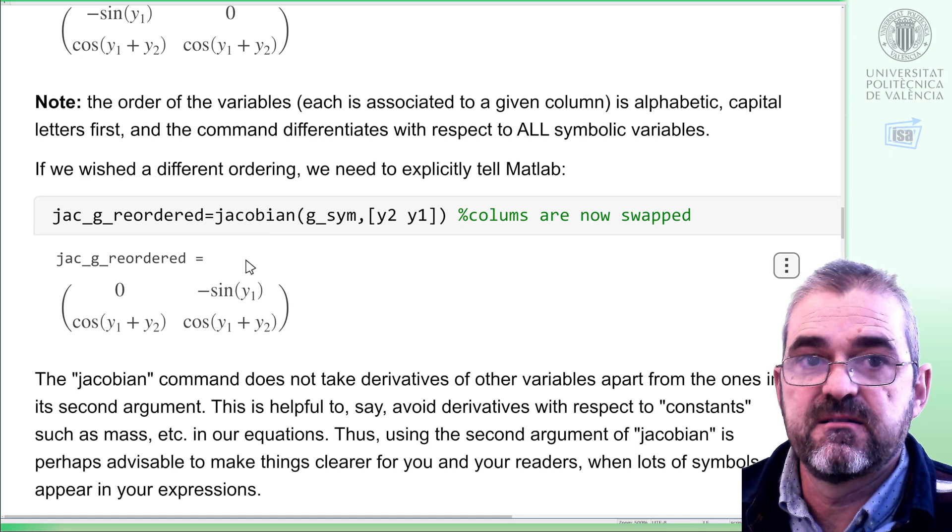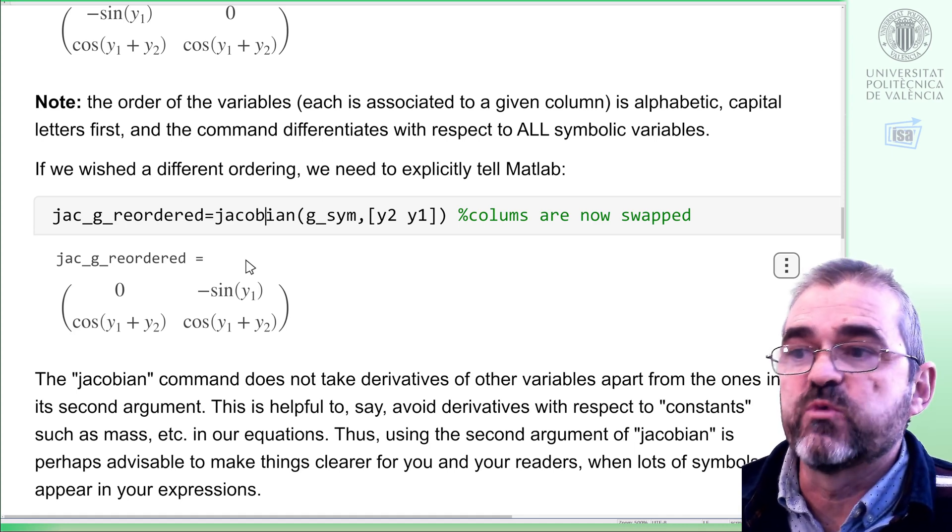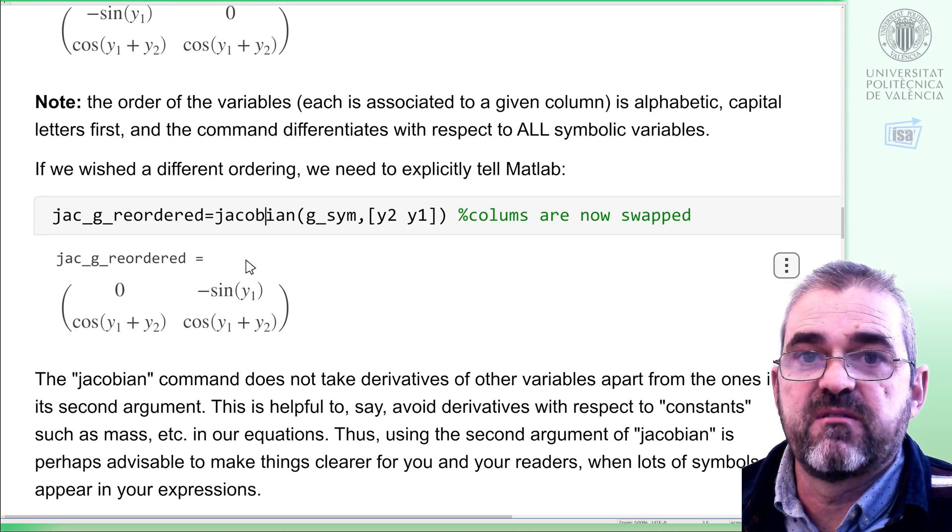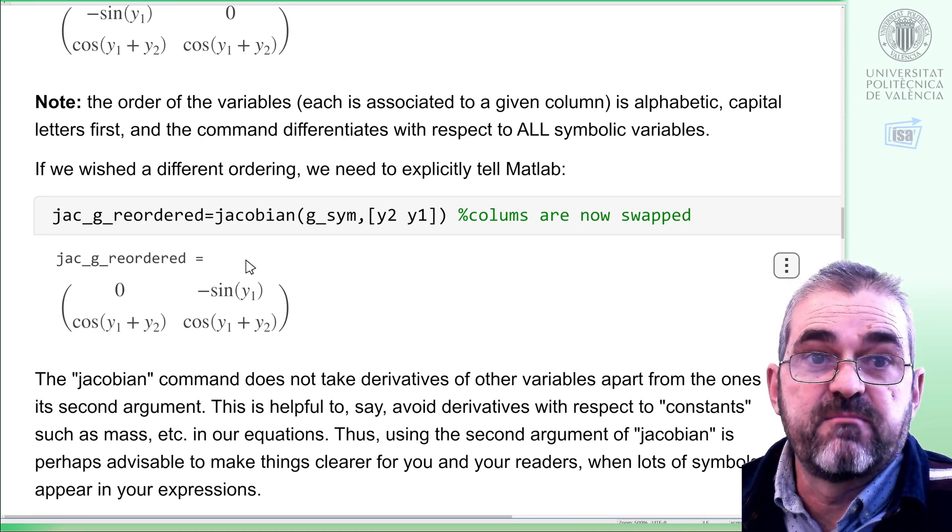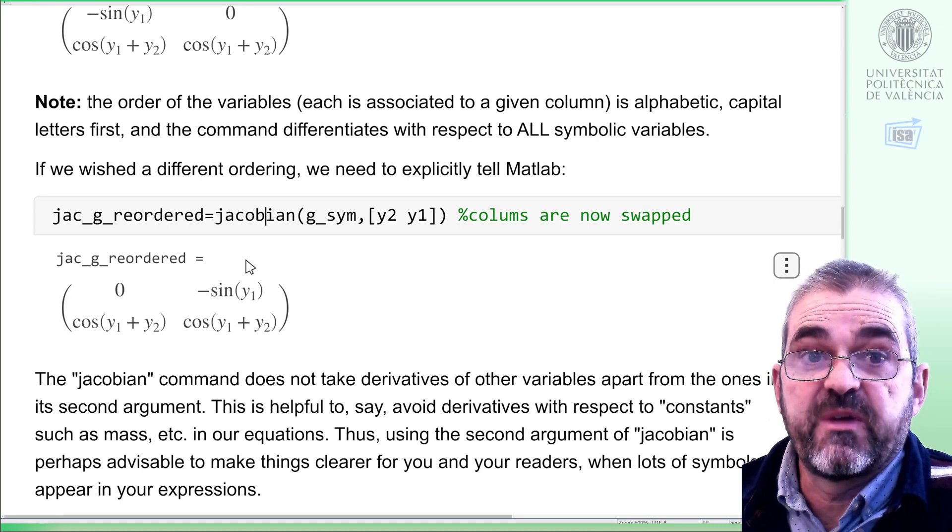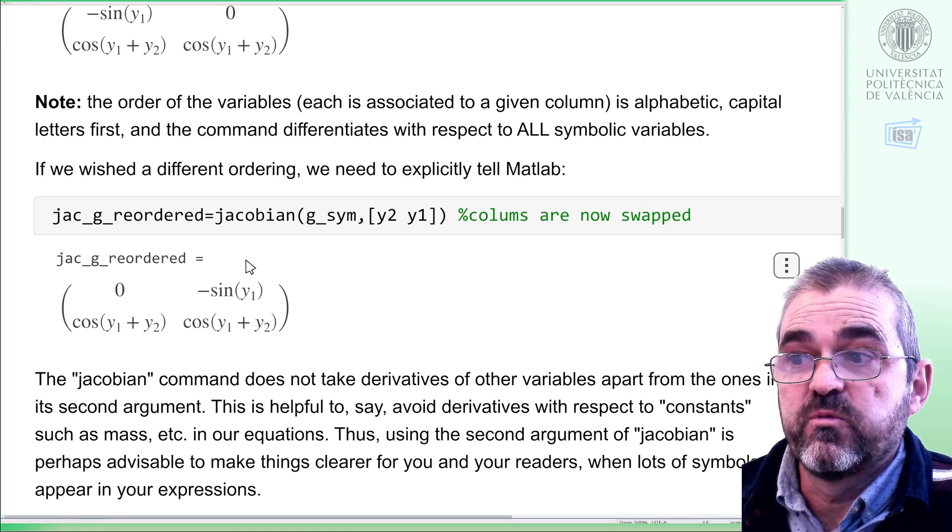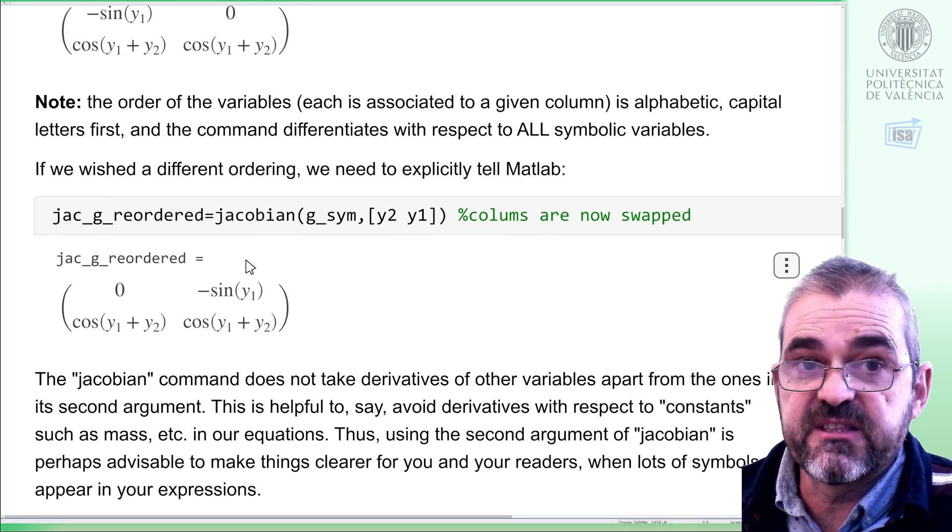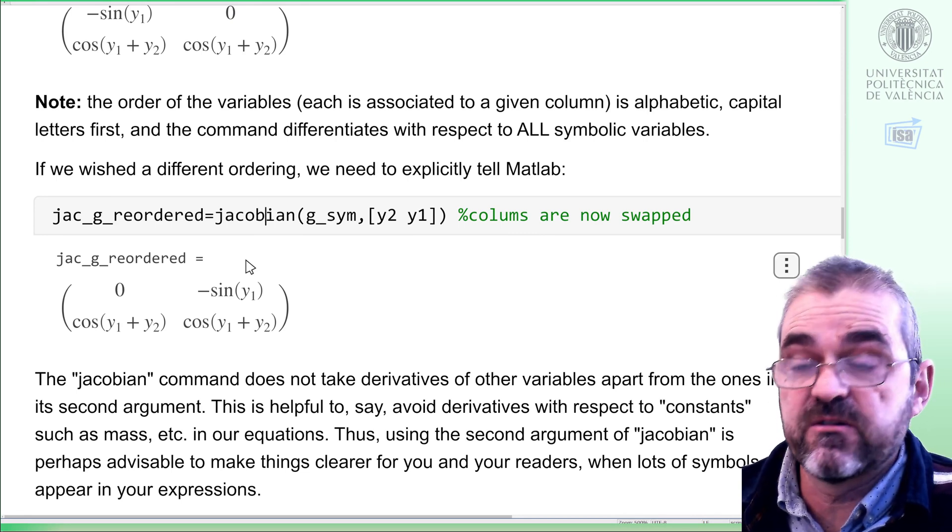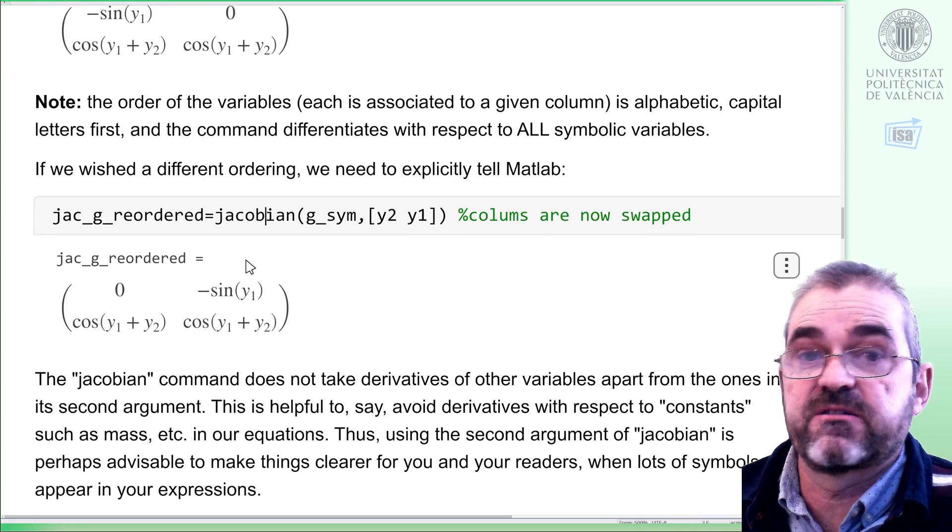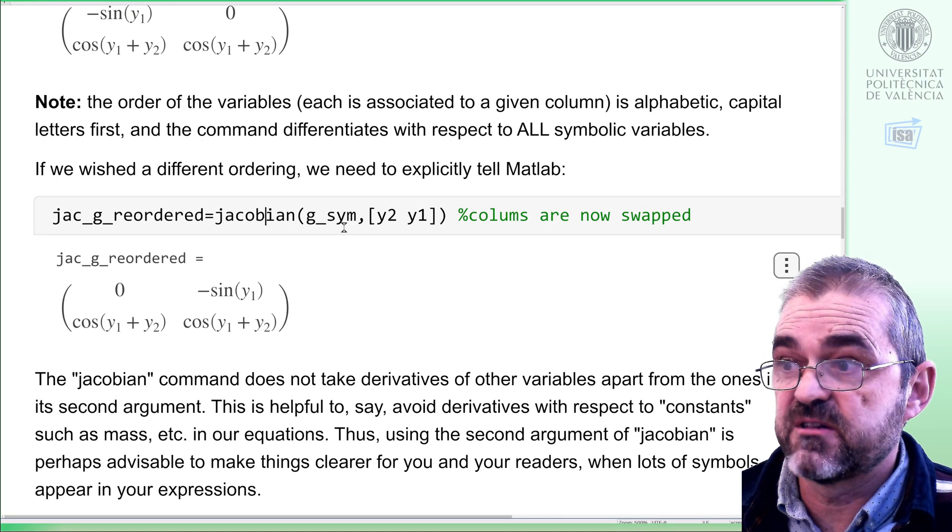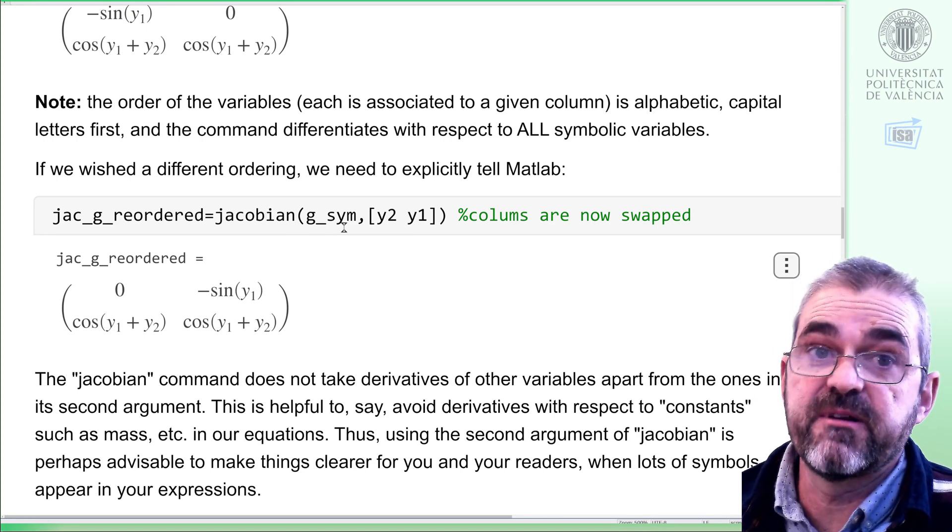And also, the second argument is helpful in many cases, because, for instance, in equations, in physics, we have a lot of letters that are actually constants, say, a mass, a length, so we actually don't want to take derivatives with respect to the mass, because that mass is just 3.1, like a number. So, when we have that kind of letters, we do not want to take derivatives with respect to them, we can just call Jacobian, omitting that letters from the second argument. So, using the second argument in Jacobian makes things more readable.